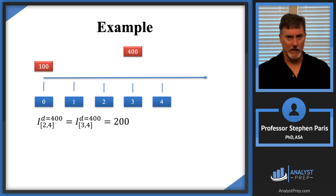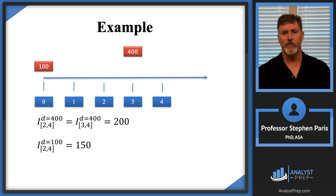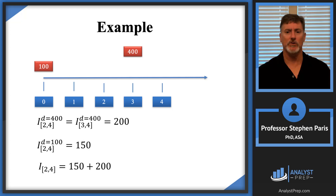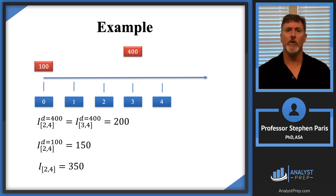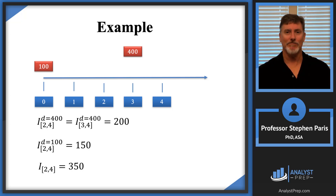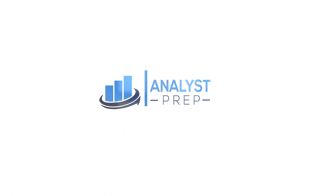The total interest earned between time 2 and time 4 is the sum of both parts: $150 from the $100 deposit plus $200 from the $400 deposit equals $350 — exactly the same answer as before. Both techniques give the same result of $350, and I don't see one as more advantageous than the other. It's good to understand both methods.